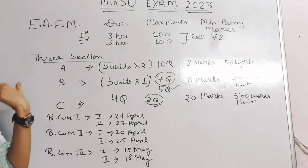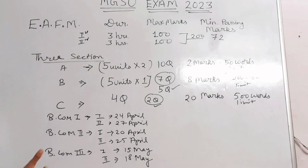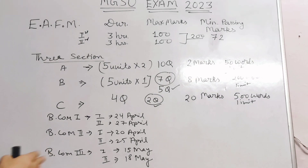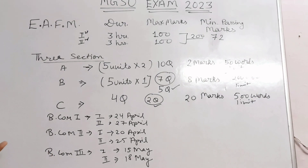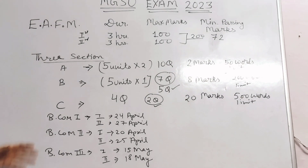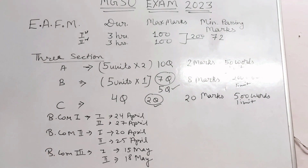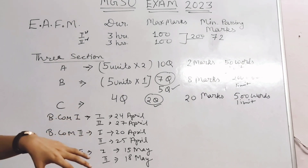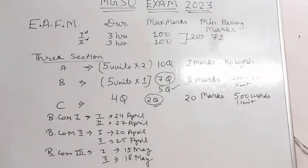If you practice the last 3 or 4 years' papers, you can see which units are likely to come this year or not. You can work in a smart way — focus on units with a higher chance of being asked in each question.